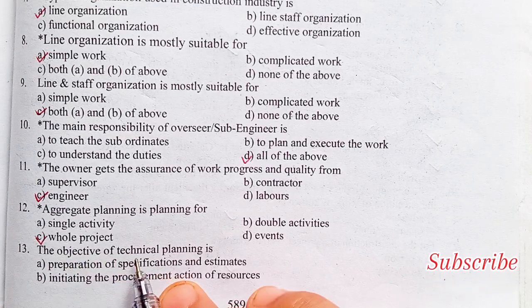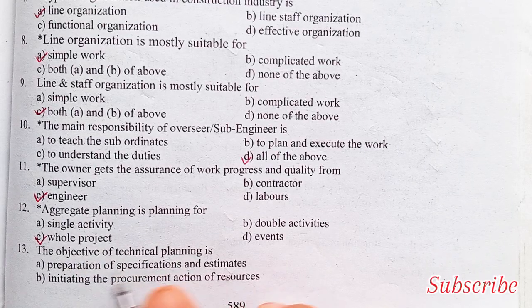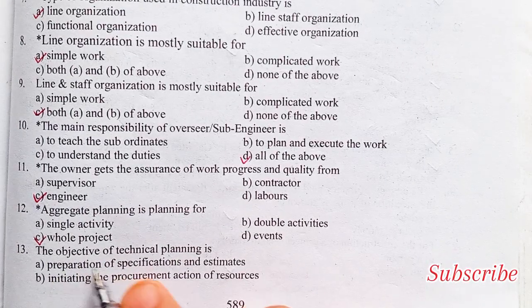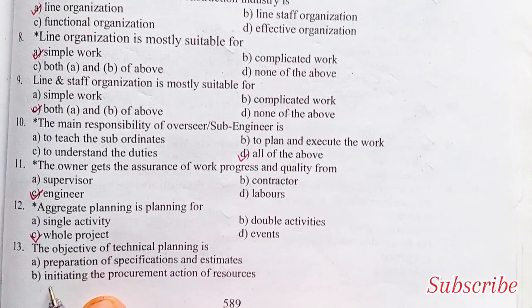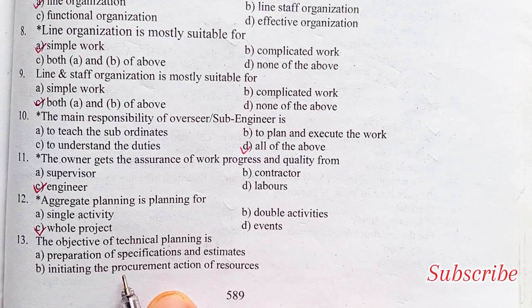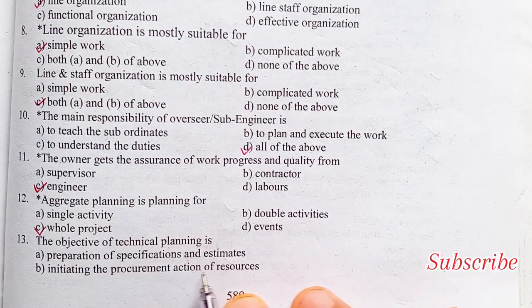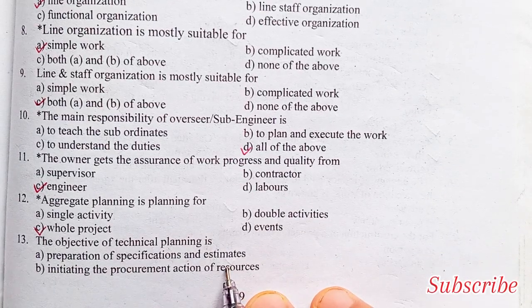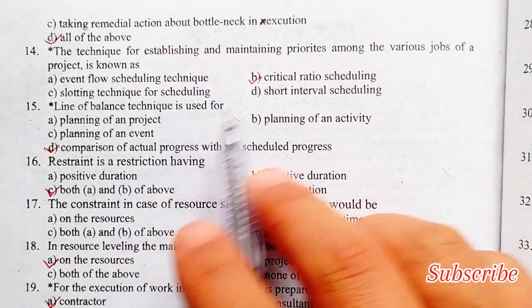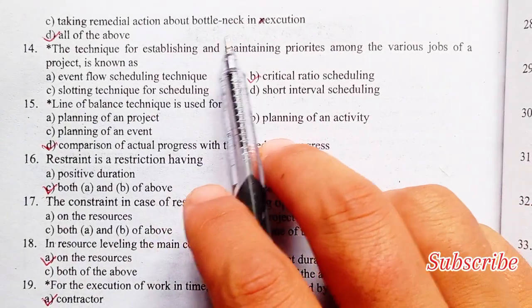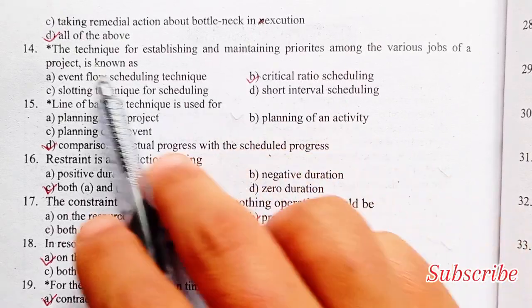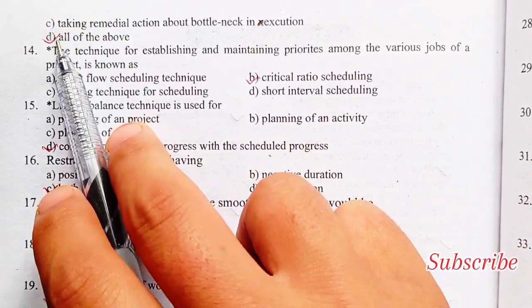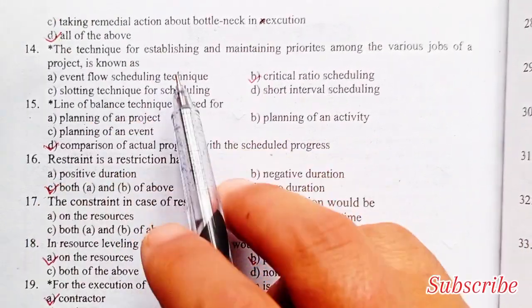The objective of technical planning is: preparation of specifications and estimates, initiating the procedure and main action of resources, taking remedial action about bottlenecks in execution, all of the above. Option D is the right answer — all of the above.